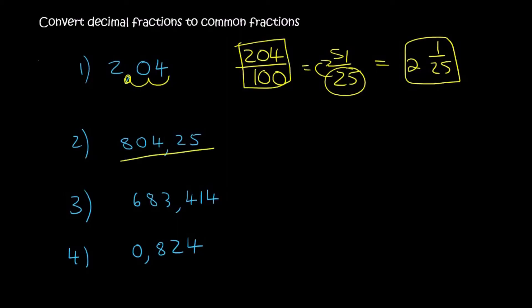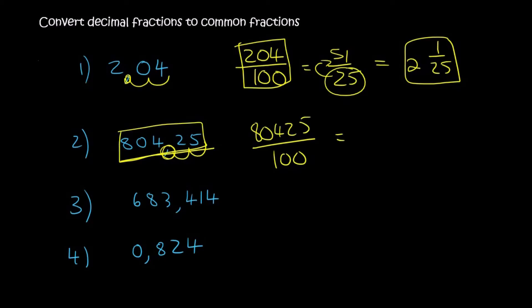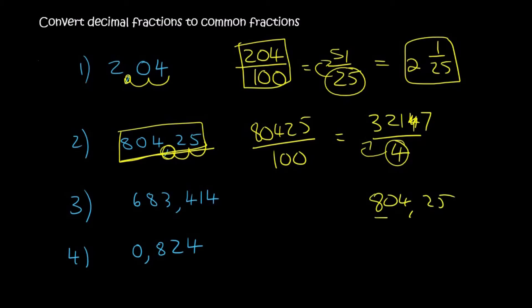Now we've got 804.25. We see it's two decimal places, so that's going to be over 100. You write the number 80425 over 100. Typing that into the calculator simplifies to 3217 over 4. To convert this improper fraction: 3217 divided by 4 equals 804.25. It goes in 804 times, and 804 times 4 is 3216, so there's 1 left over. The answer is 804 and 1 over 4.